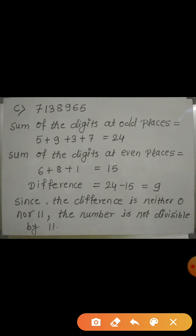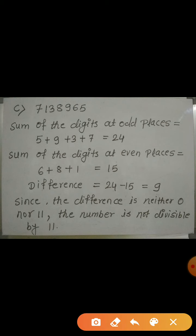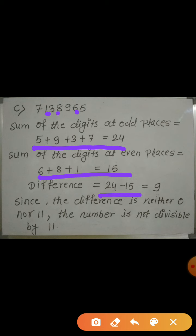Let's see the third example. The number is 7138965. The digits at odd places are 5, 9, 3, and 7, and their sum is 24. The digits at even places are 6, 8, and 1, and their sum is 15. Taking the difference: 24 minus 15 equals 9. Since the difference is neither 0 nor 11,